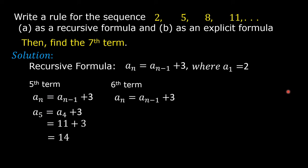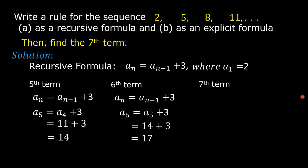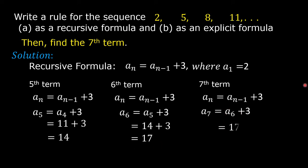For the sixth term, with n equals 6, a sub 6 equals a sub 5 plus 3. a sub 5 is 14, so a sub 6 equals 17. We can now solve for the seventh term. The preceding term is the sixth term. With n equals 7, a sub 7 equals a sub 6 plus 3. a sub 6 is 17, so 17 plus 3 is 20. The seventh term is 20.